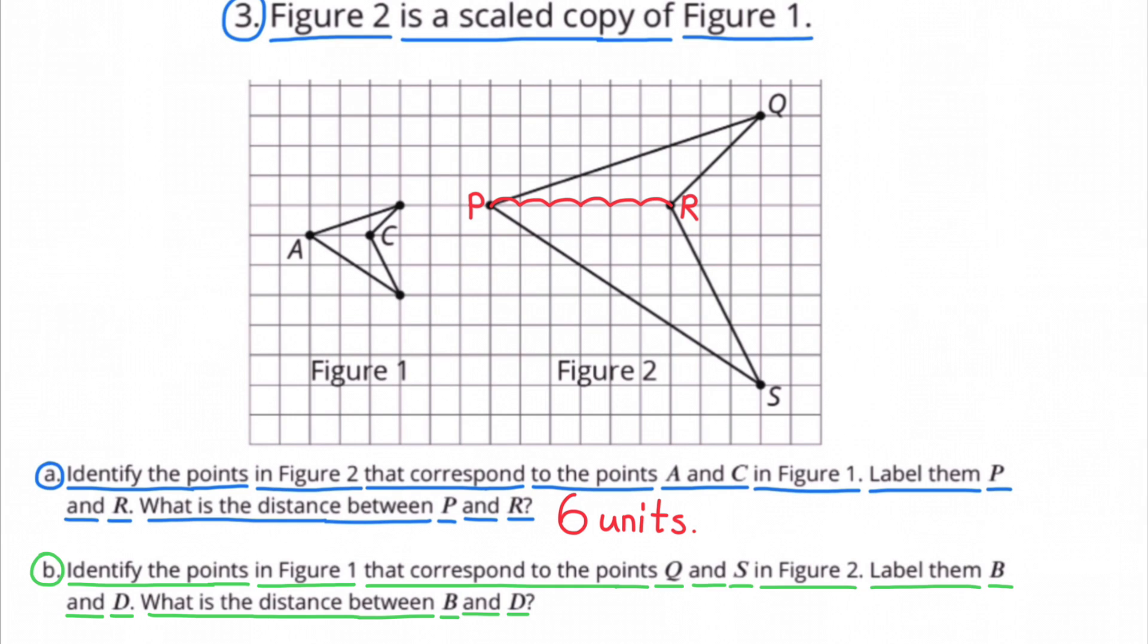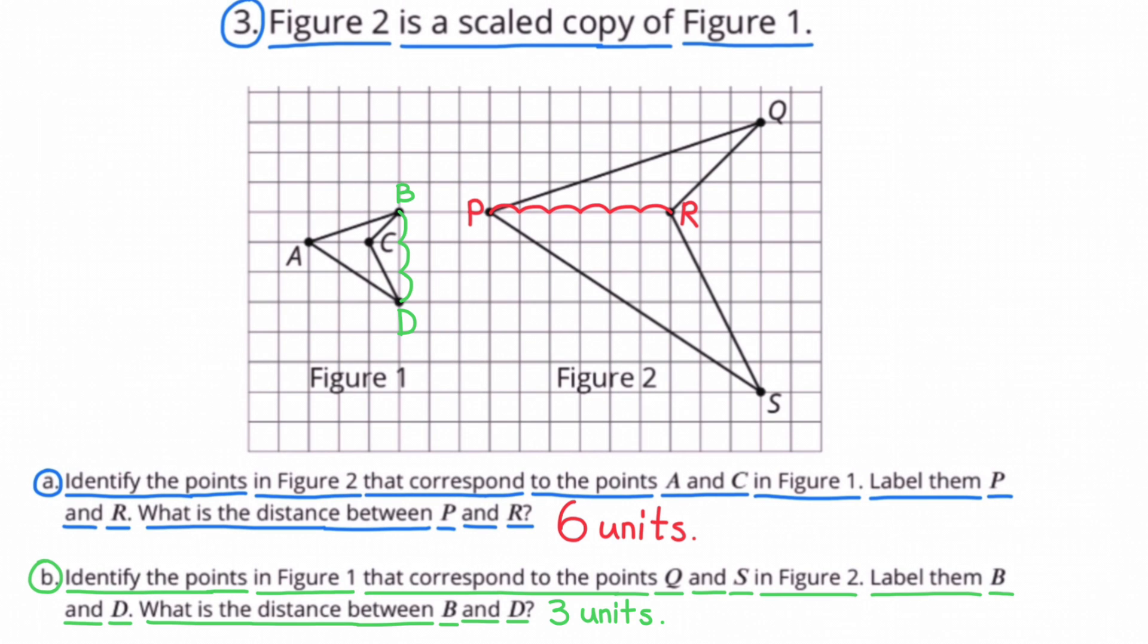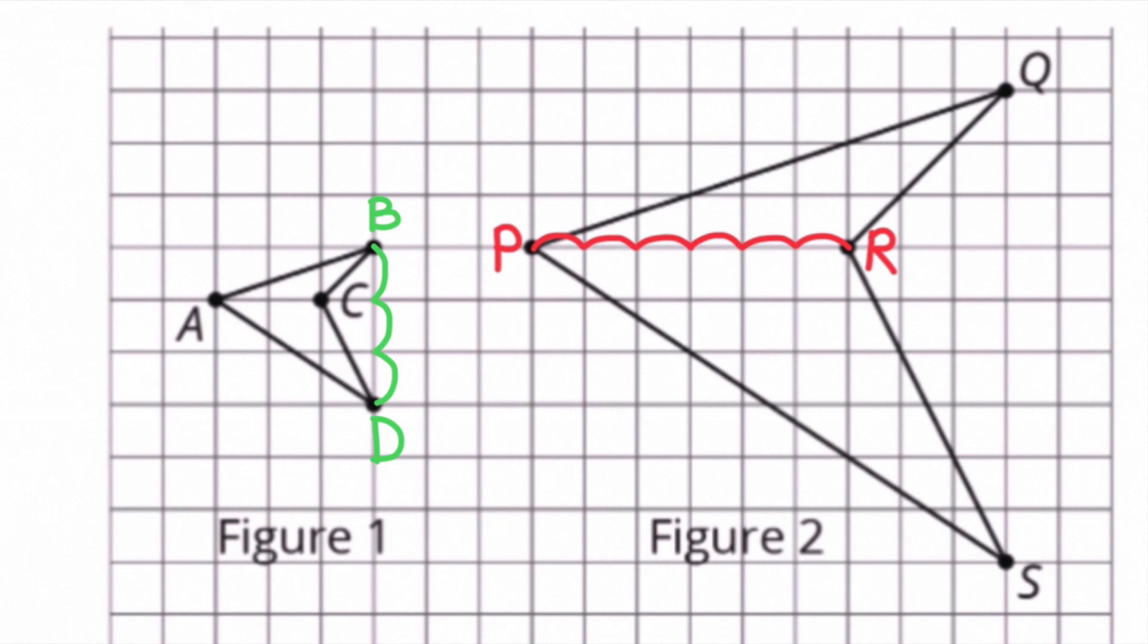B. Identify the points in Figure 1 that correspond to the points Q and S in Figure 2. Label them B and D. What is the distance between B and D? Here are the points B and D that correspond with points Q and S. The distance between B and D is 3 units.